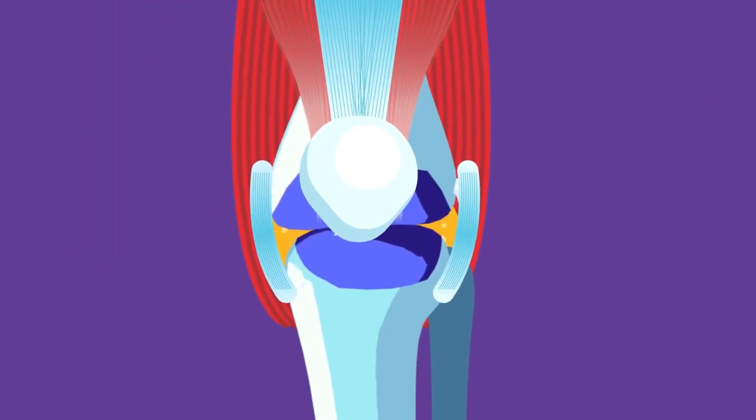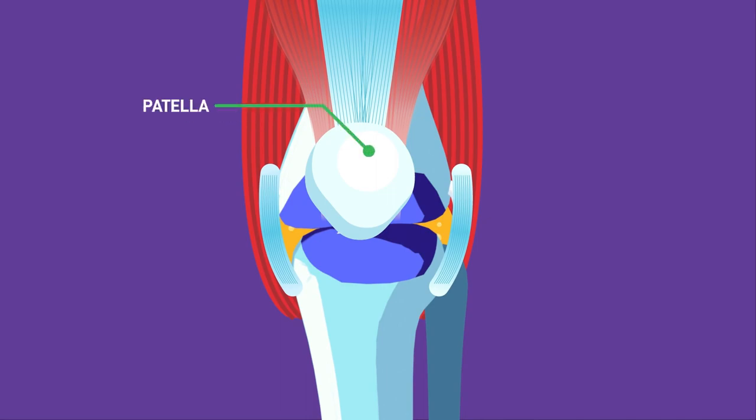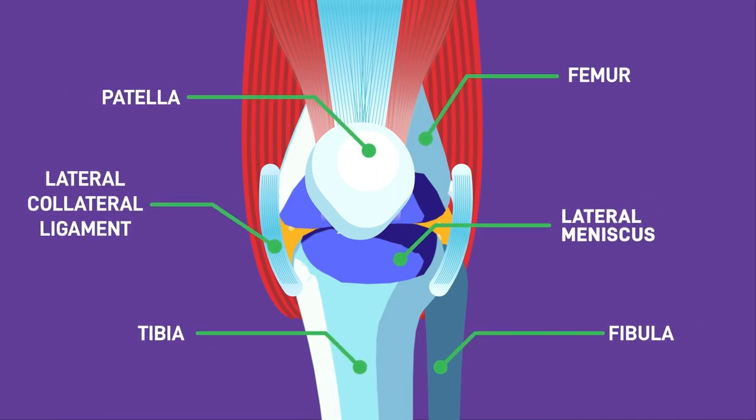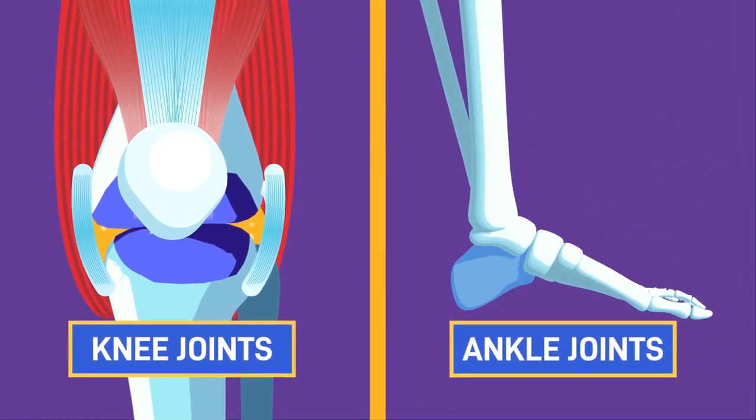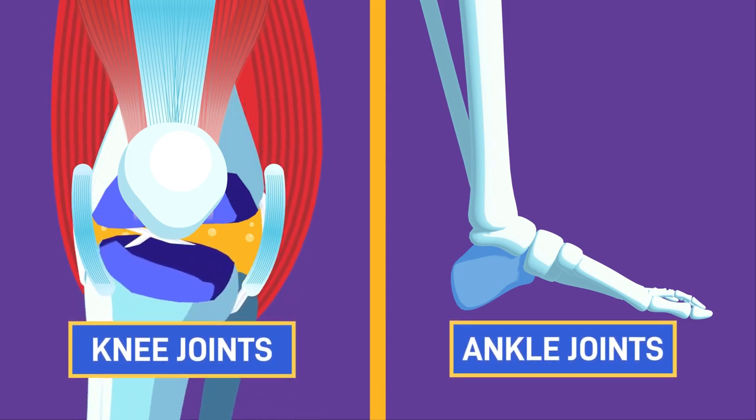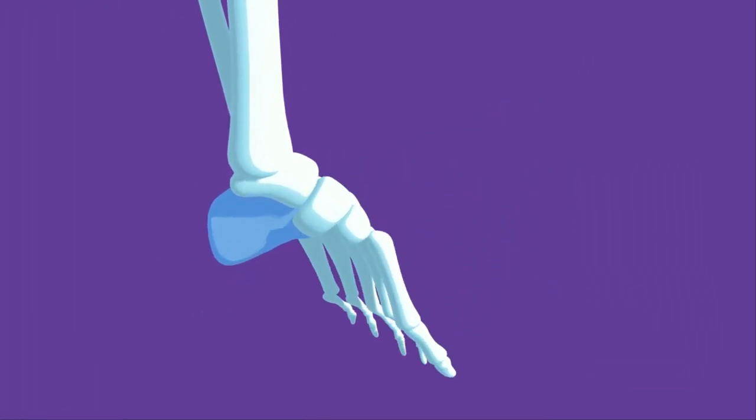Certain hinge joints are referred to as modified, because of the arrangement of multiple bones and their complex interactions. The knee joint and ankle joint are classified as modified hinge joints. The structure allows for a slight rotation of the knee, and circular movement of the ankle.